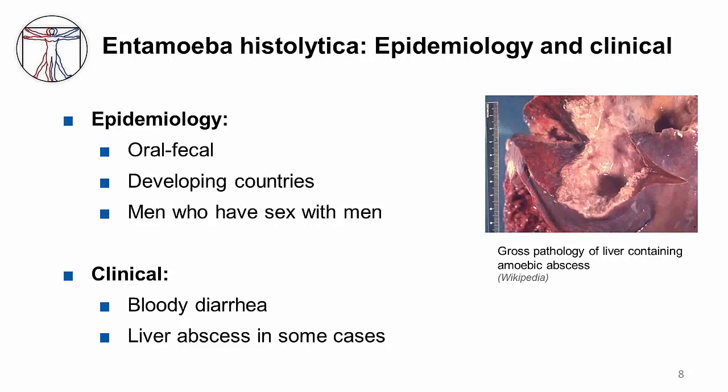The clinical manifestations follow from the pathophysiology. The infected cysts differentiate into trophozoites, which invade the colonic epithelium. You might hear about a flask-shaped ulcer that forms given the tissue destruction in the colon. Patients complain of bloody, mucus-containing diarrhea or dysentery. The trophozoites then enter the portal circulation, where they affect the liver, and in some patients, abscesses containing these trophozoites may form.